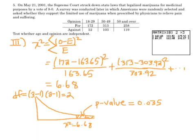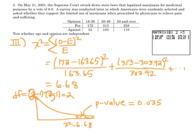Observed minus expected squared over expected — my observed is 172, my expected is 163.65, squared over 163.65, plus observed 313 minus expected 303.92 squared over that, and so on for all six cells. I get a chi-squared value of 6.68. The degrees of freedom formula is rows minus 1 times columns minus 1. There are two rows and three columns — this is a 2 by 3 table — so degrees of freedom equals 2.